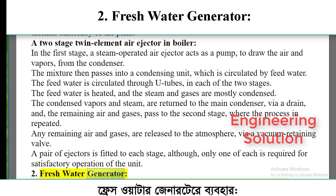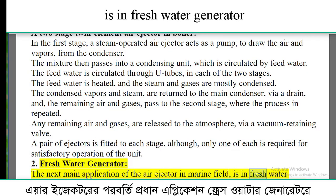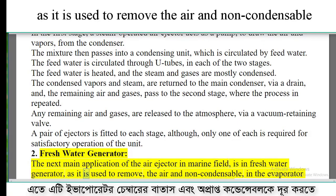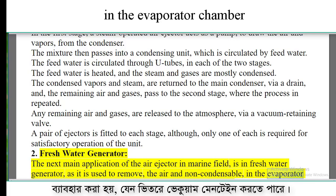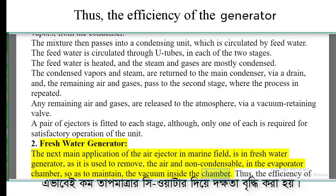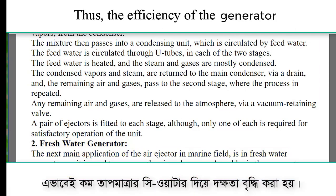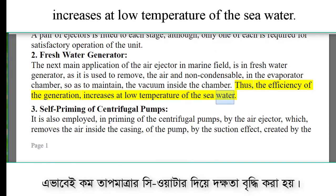Fresh water generator: the next main application of the air ejector in the marine field is in the fresh water generator, where it is used to remove the air and non-condensable gases in the evaporator chamber so as to maintain the vacuum inside the chamber. Thus, the efficiency of generation increases at low temperature of the sea water.